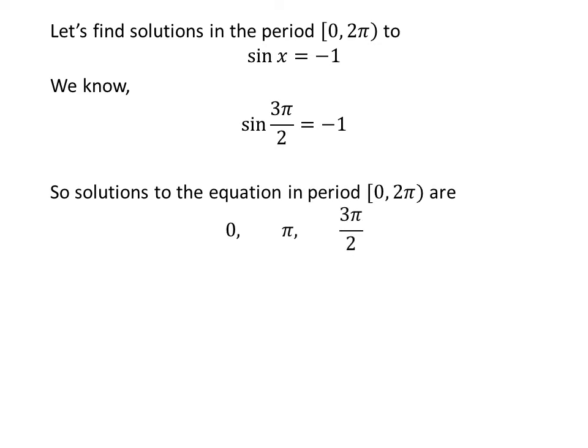So the solutions to the equation sine of x times sine of x plus 1 is equal to 0 in the period 0 to 2 times pi are 0, pi, and 3 times pi upon 2.